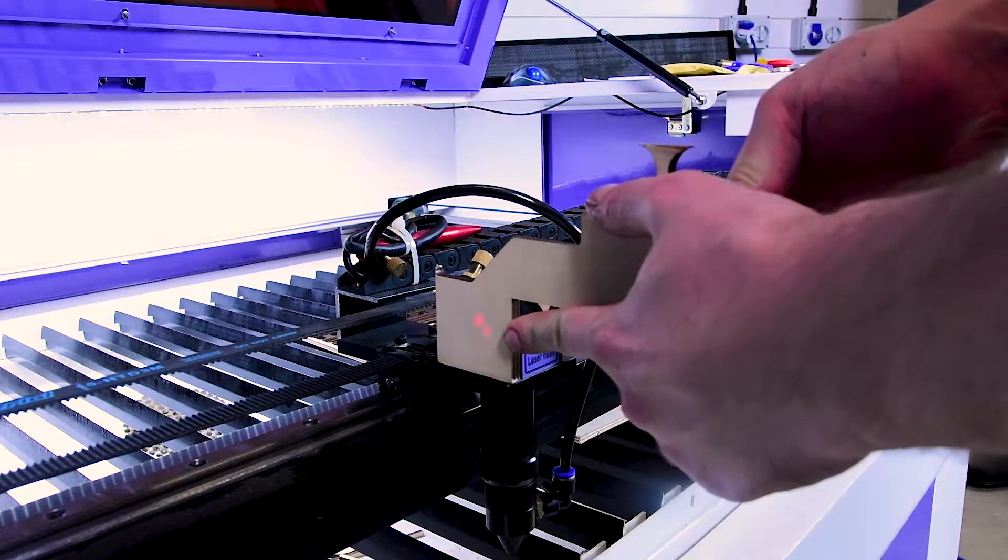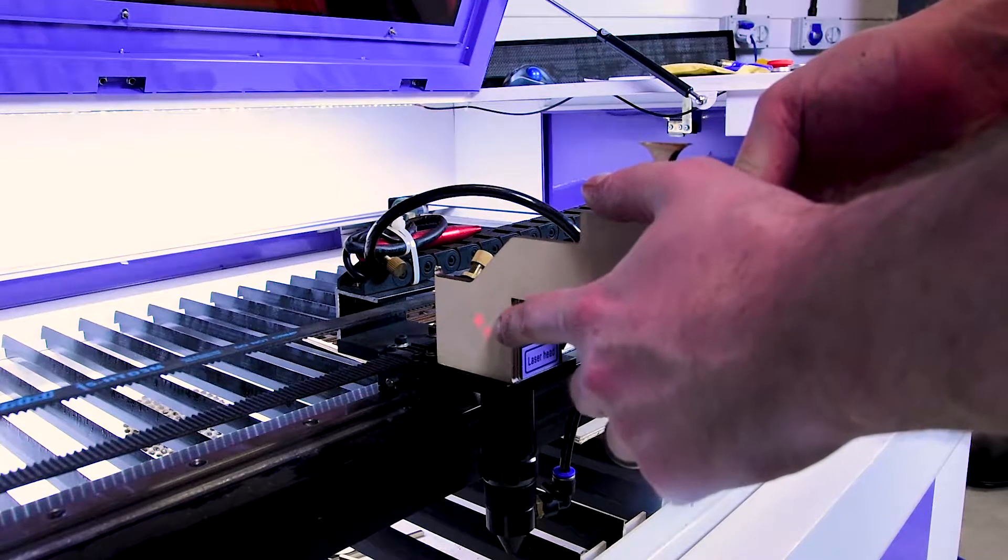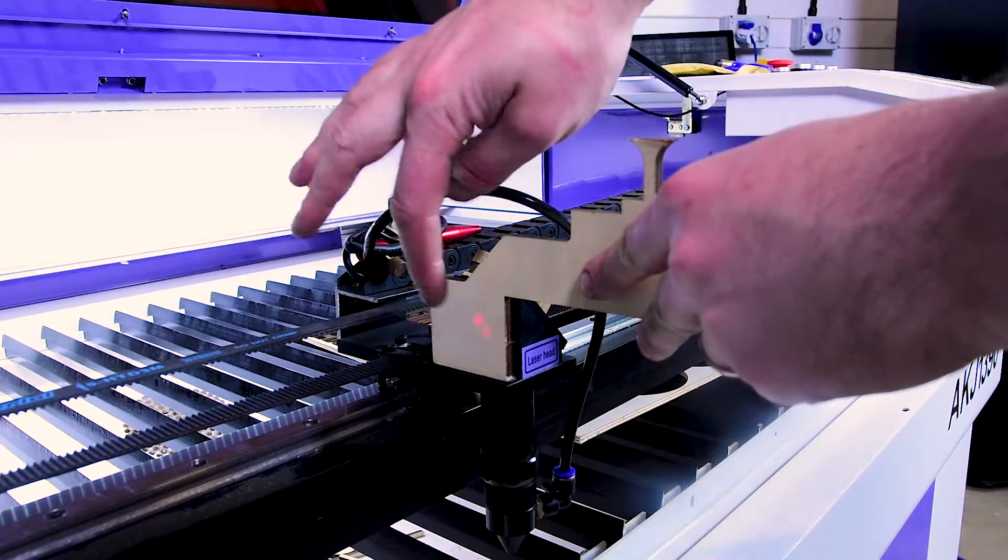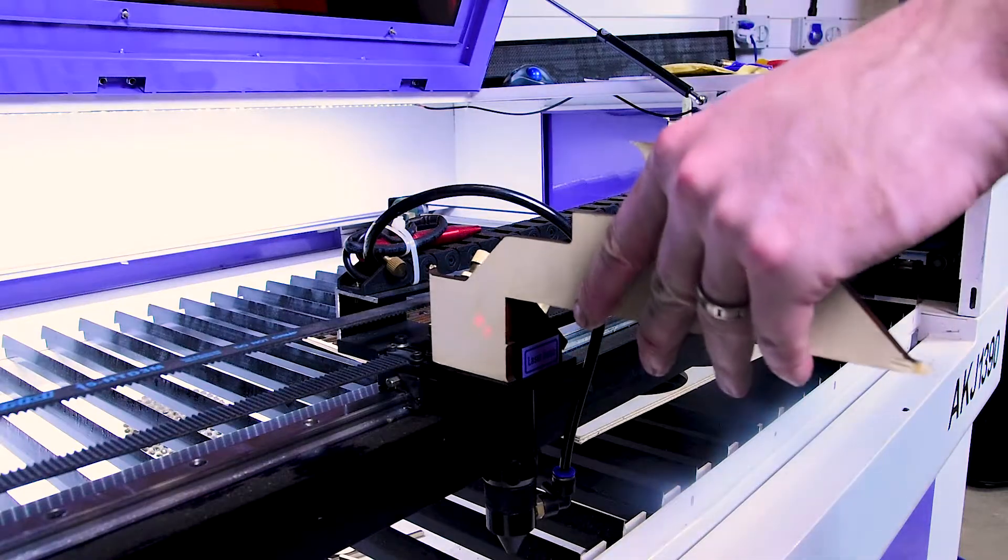You'll notice there's two dots here. This is my beam combiner. You've got a reflection off the front of the beam combiner mirror and a reflection off the back of the beam combiner mirror, so don't worry too much about that.